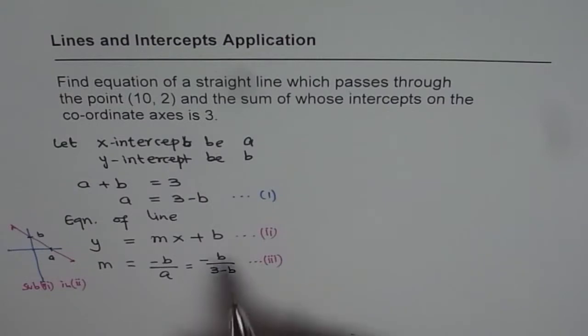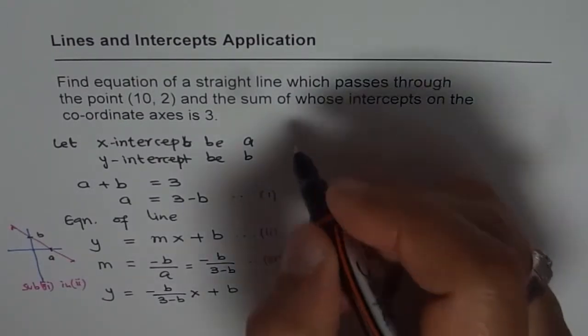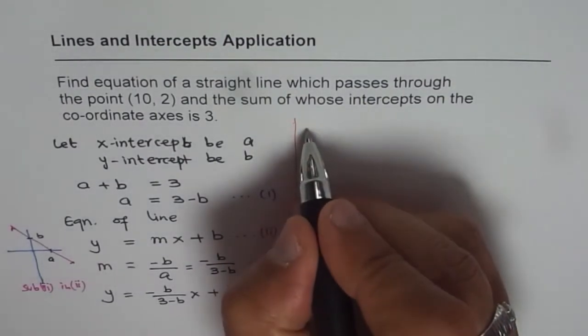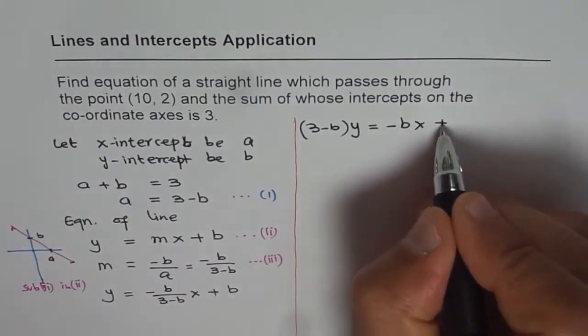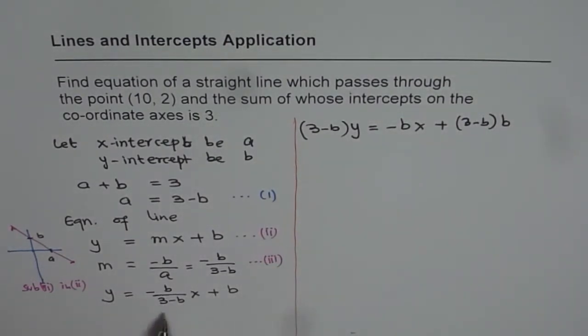We get our equation as y = M slope is -B/(3 - B) times x plus y-intercept B. That is the equation. To solve this equation, let us multiply by (3 - B), all these terms. Then we get (3 - B) times y = -Bx + (3 - B) times B. We multiply all these terms by (3 - B), getting rid of fractions.